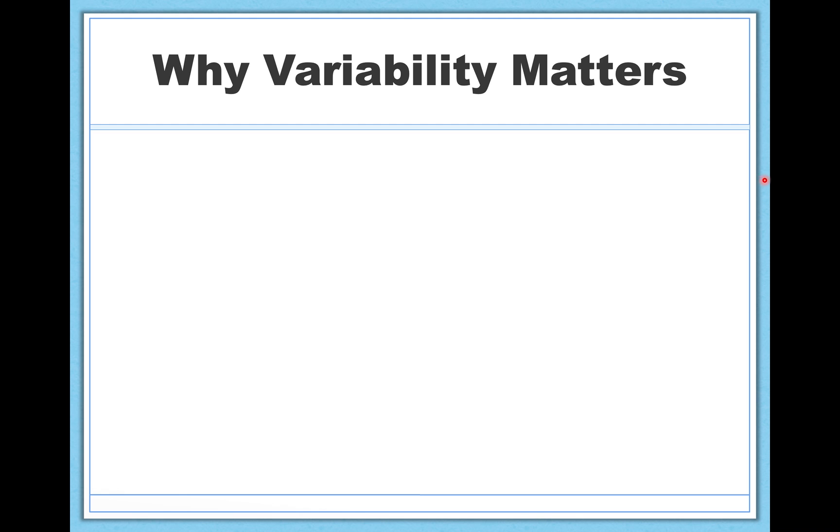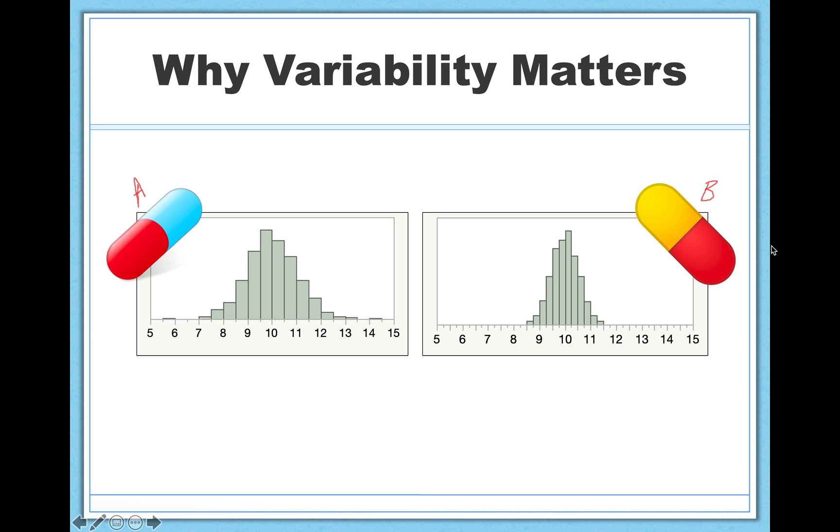Here's another example. Let's say you're working for a pharmaceutical company. You need to decide between two different medications for depression. We'll call them medication A and medication B. So let's say you did a study where you measured how much improvement happened when people took one over the other, and this is what you got. So let's say over here that higher scores mean more improvement and lower scores mean little to no improvement.